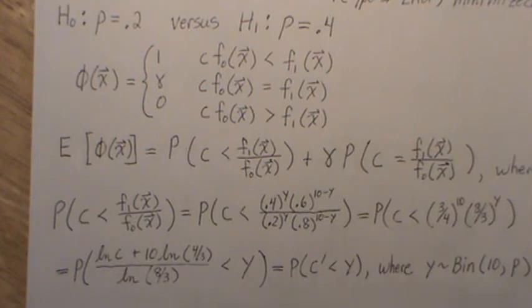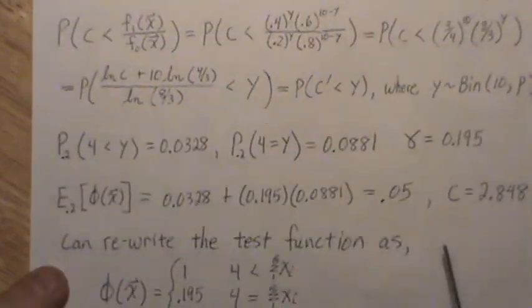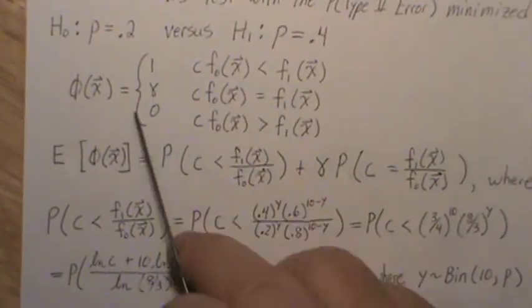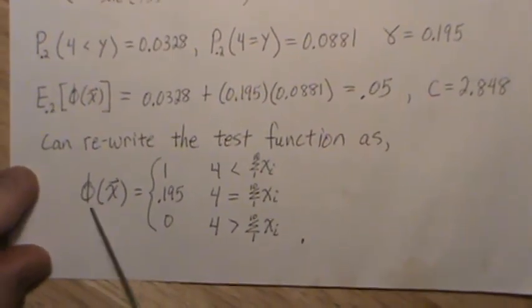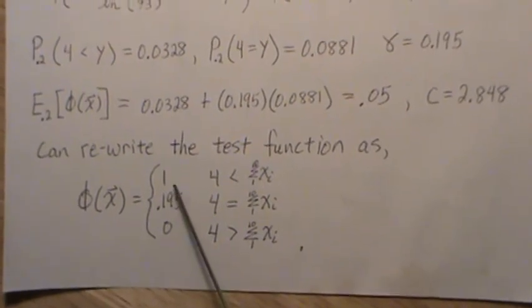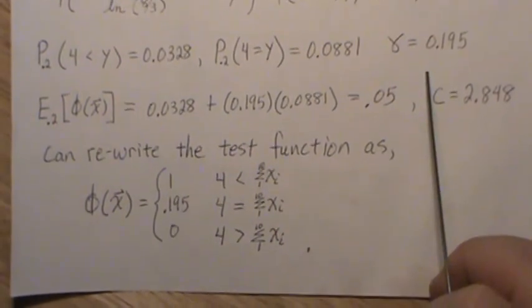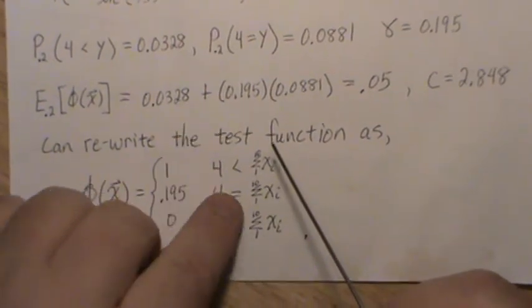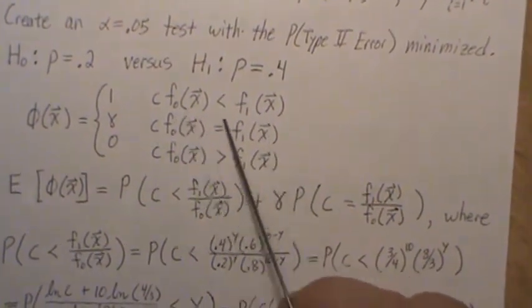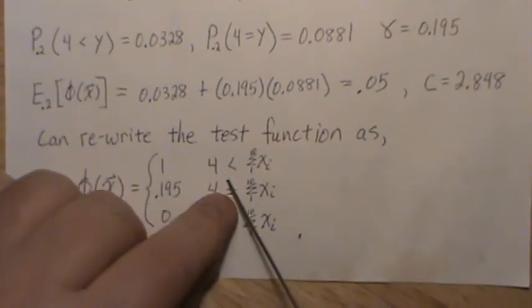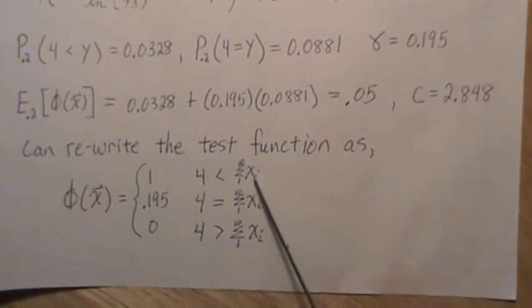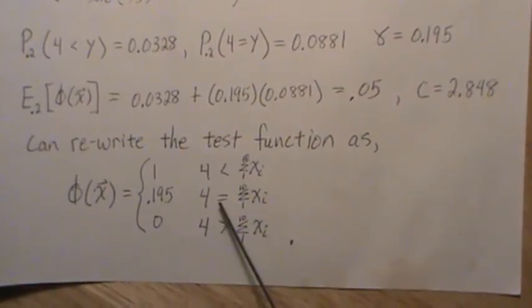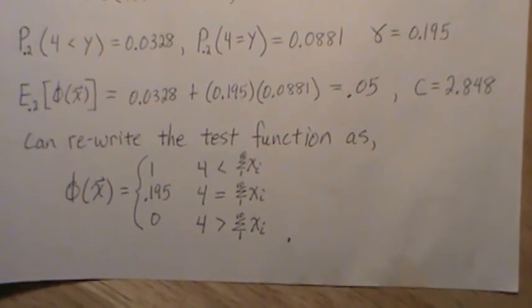And so it's a 0.05 test that minimizes the type 2 error. Now usually most people write it like this. So instead of this, they can just rewrite the test function as this. Phi of our data is 1, and this is gamma which we determined. But instead of using the likelihood ratio or the joint probability mass functions, we just keep it as y or the sum of the x's. So if the sum of our data is more than 4 or equal to 4 or less than 4, then we create this test.